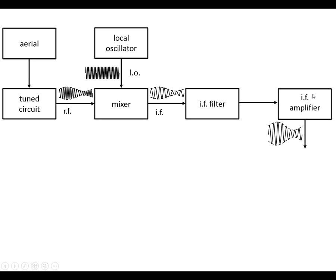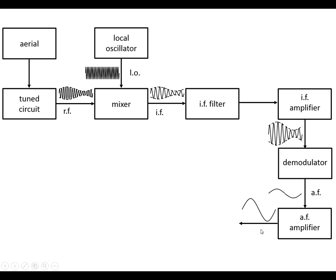We then go into the intermediate frequency amplifier which provides the sensitivity, so any weak signals will get boosted. Then it goes through to the demodulator where we get the audio frequency — the speech or music that has been transmitted on the radio wave — comes out, and then we boost this signal and put it into a speaker.